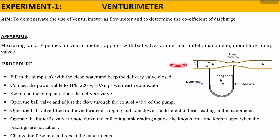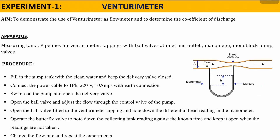This is the pictorial representation of the venturi meter. Water comes in at the inlet and exits at the outlet. This is the U-tube manometer. The venturi meter has two different diameters — the inlet area and the throat area — where the pipe contracts. Due to this contraction, a pressure difference is created, which is measured as head difference using the manometer. This is the basic concept of the venturi meter.